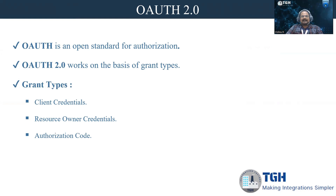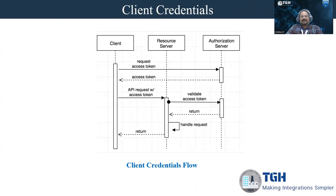Before going into the practicality, let us understand how the three grant types work. In case of client credentials, there is a client that needs a resource. Before sending the request to the resource, it needs authorization. The client sends a request containing a client ID and client secret to an authorization server. The authorization server validates the client ID and secret, and provides an access token. Using this access token, a call is made to the resource server, which validates the token and then grants access to the resource.